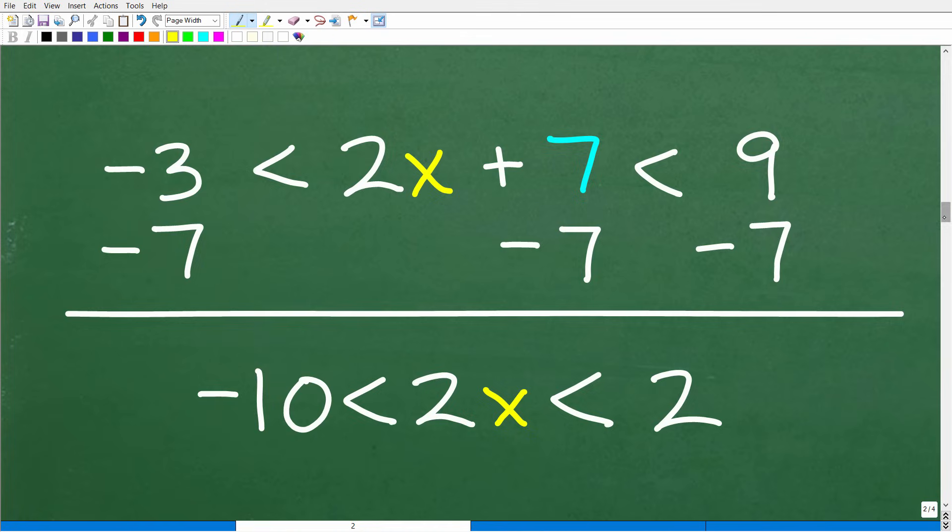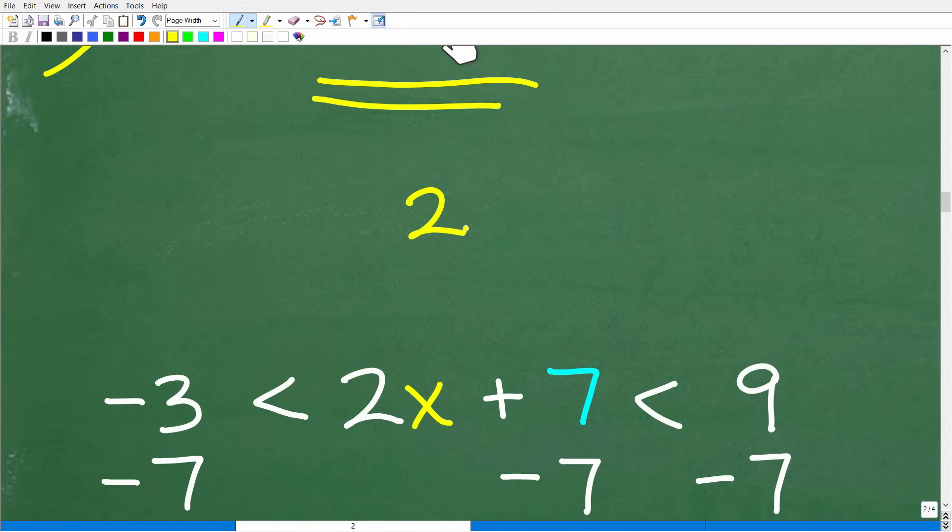Let me show you the difference real quick. If I have something like 2x is less than 8, we would refer to this as a linear inequality. If we have a compound inequality, this is what we're talking about, like and and or statement.